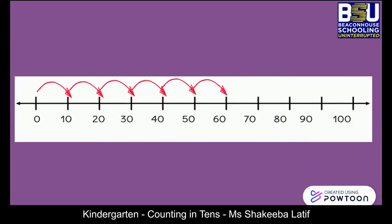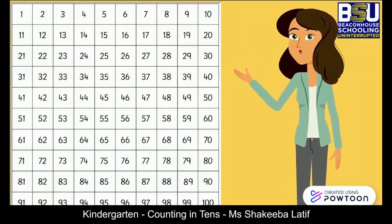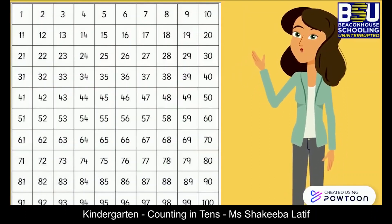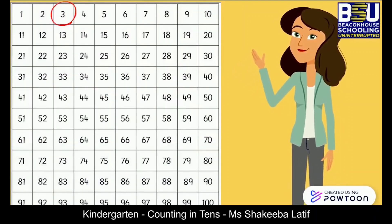Counting in tens can also be done using a number line. Here we will jump on every 10th number. Now try counting by tens from a random number — I have chosen three as my example.